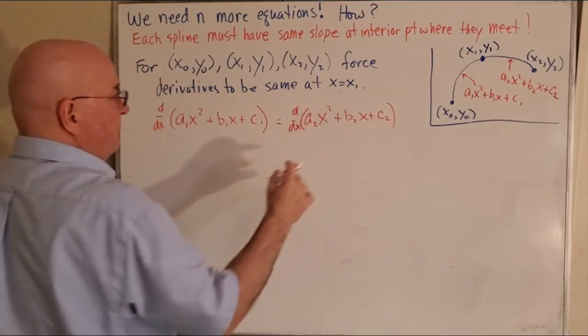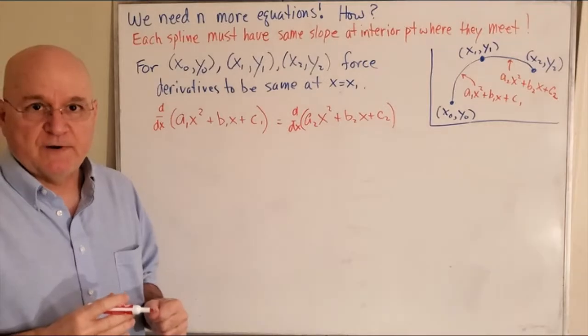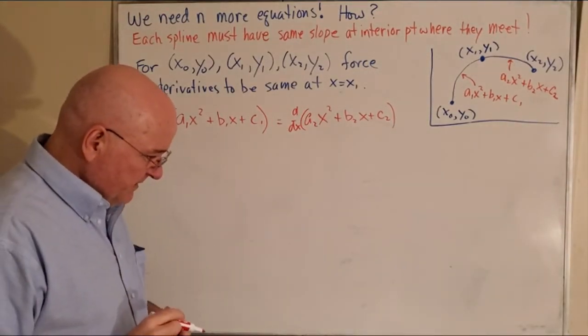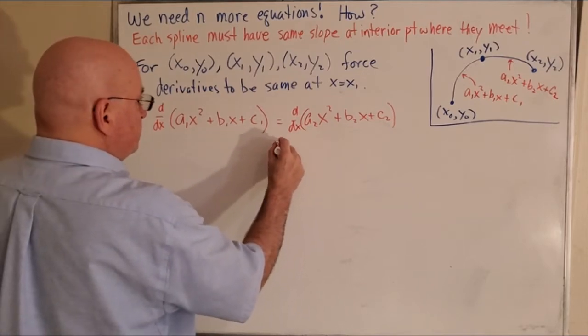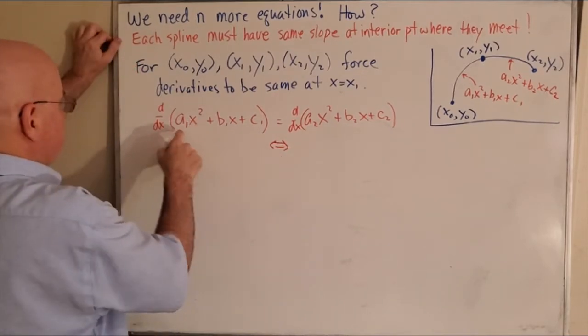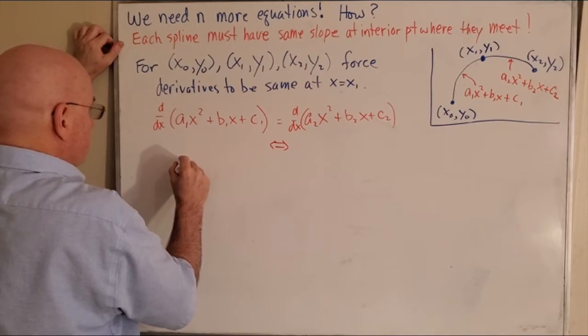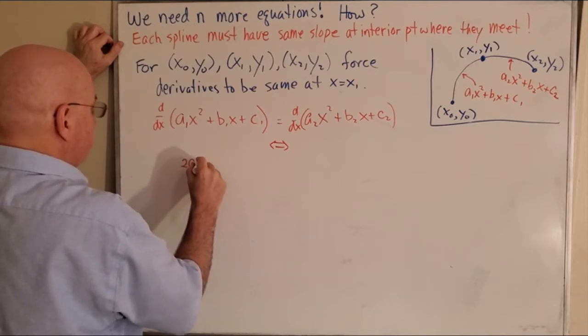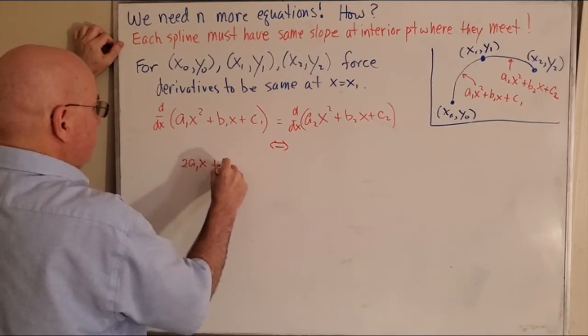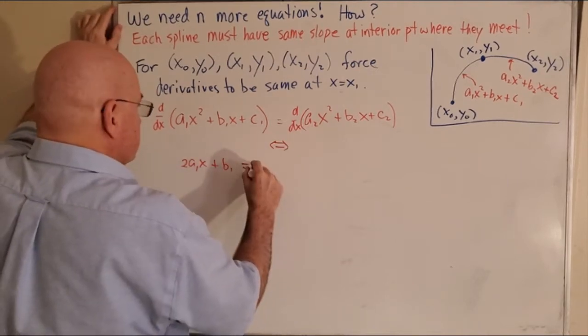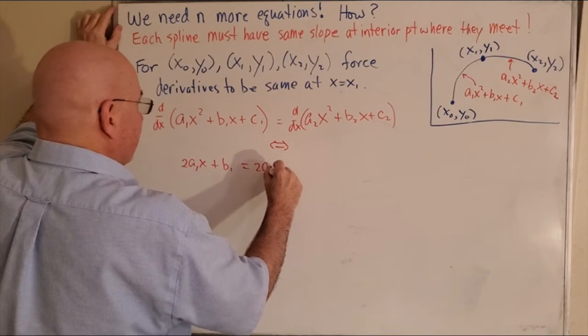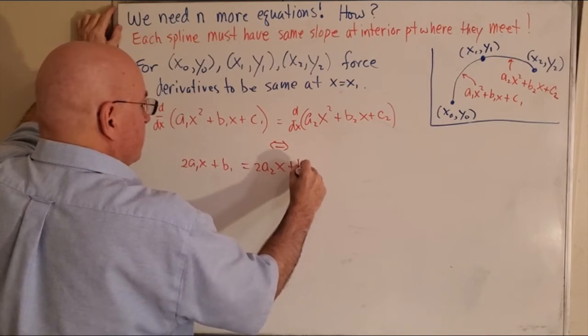Now they're not equal to each other everywhere, but at the point x1 they are going to be equal to each other. So this is true. That would mean that I get 2a1x + b1 equals 2a2x + b2.